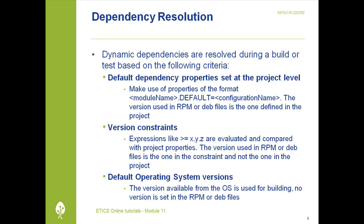Dynamic dependencies are resolved during the execution of a build or test based on a number of criteria. It is possible to set default dependency properties at the project level. In this case, properties of the format module-name dot default equal configuration-name have to be defined at the project level, and are propagated to all configurations in the configuration structure of that project.